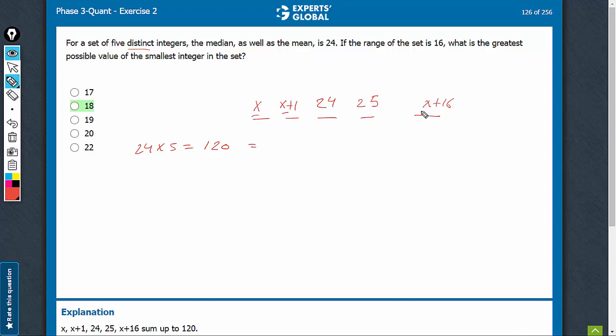x, x plus 1, x plus 1, 3x plus 1, 25, and x plus 16 gives us 66, and therefore 3x is equal to 54, and x is equal to 18.